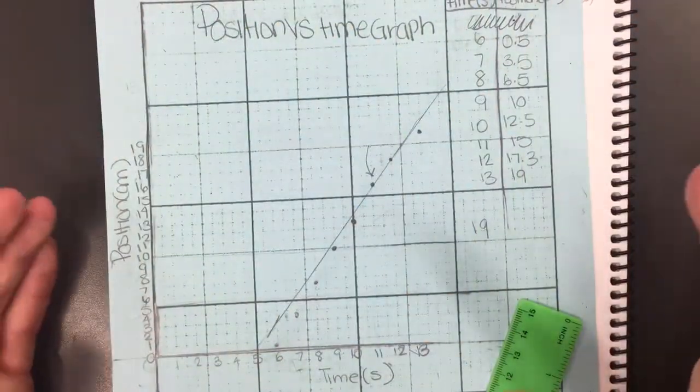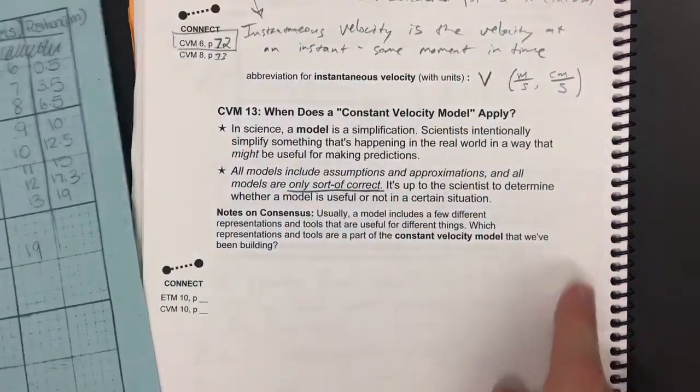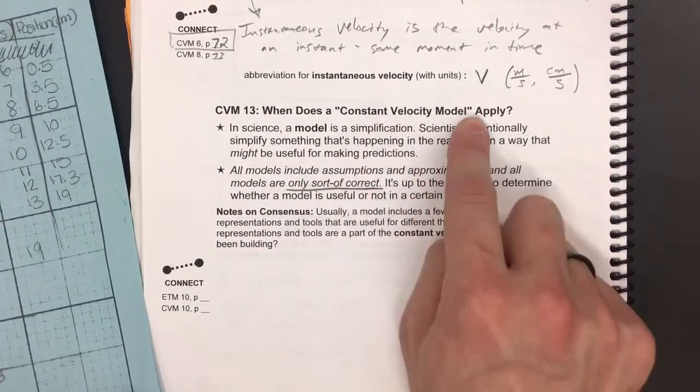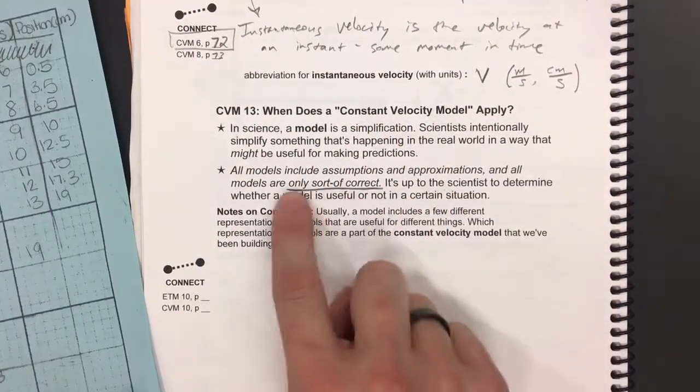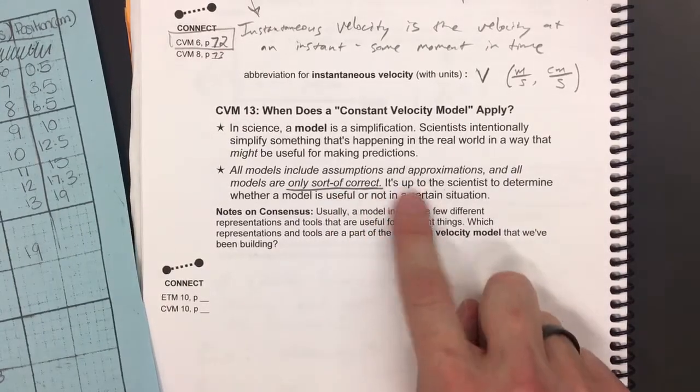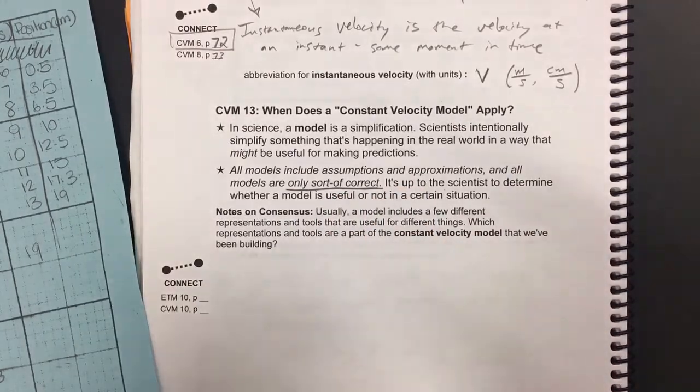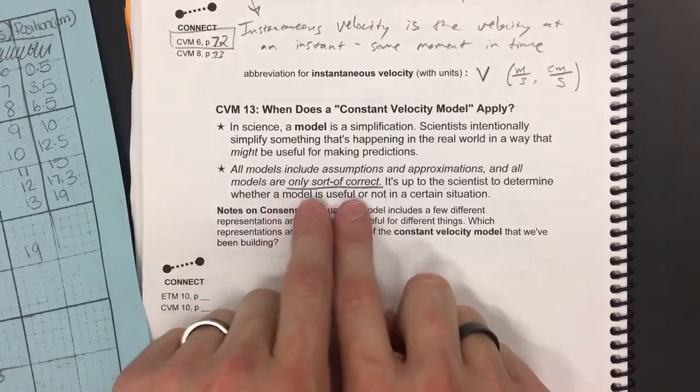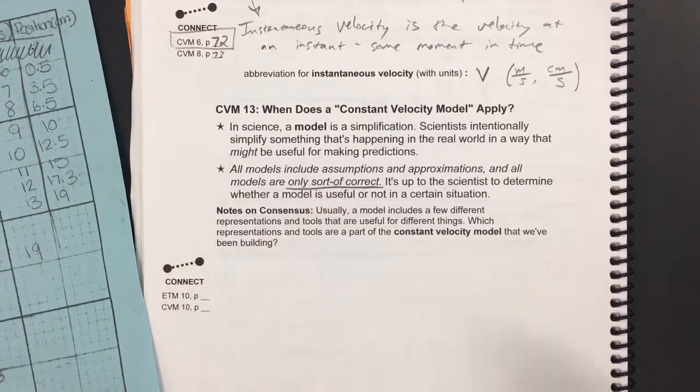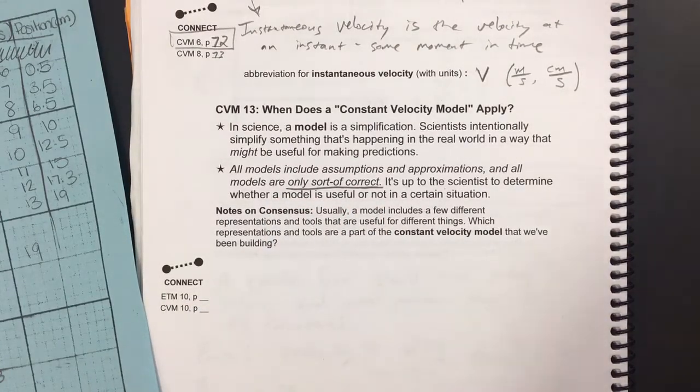Again, really nice graph here. We just want to think about how we use our constant velocity model. We know it's got to be only sort of correct, but make intelligent choices. Think carefully about how to use that straight line idea, how to use that straight line constant velocity model.